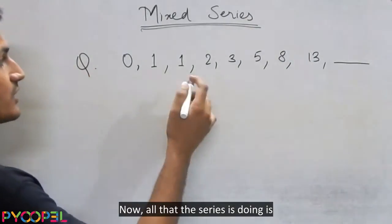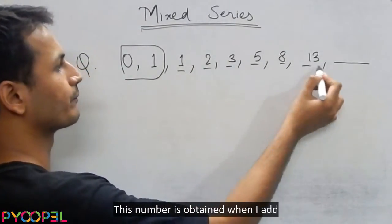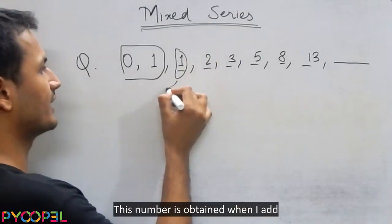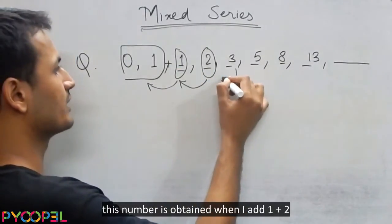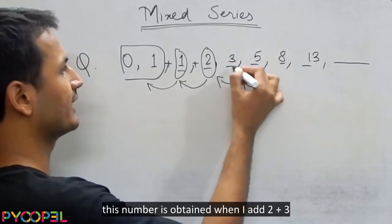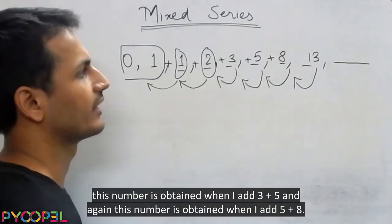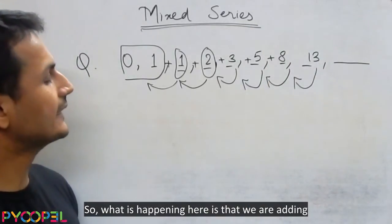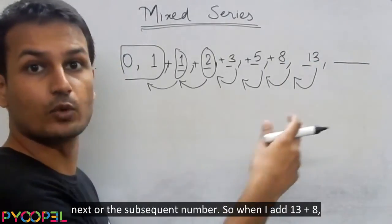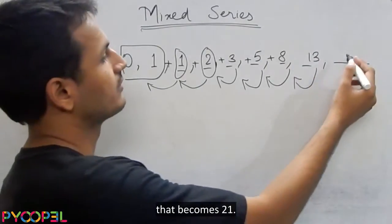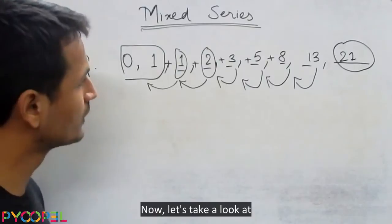Now all this series is doing is, forget the first two numbers here, but take a look at the rest ones. This number is obtained when I add 0 plus 1. This number is obtained when I add 1 plus 1. This number is obtained when I add 1 plus 2. This number is obtained when I add 2 plus 3. This number is obtained when I add 3 plus 5, and again this number is obtained when I add 5 plus 8. So what is happening here is that we are adding the last two numbers and that gives us the next or the subsequent number. So when I add 13 plus 8 that becomes 21.